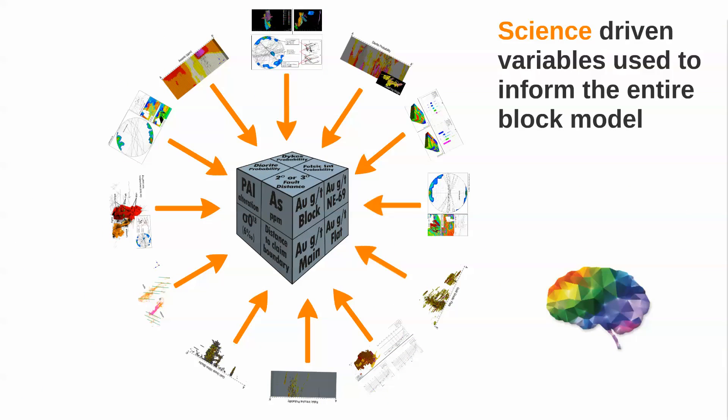Each of the spokes of this wheel represents a separate data type that was fed into every block. A few other data types were included, such as the regional oxygen isotope isopleth and even the distance from historical claim boundaries. This is the raw data from which we calculated the two independent prospectivity scores.